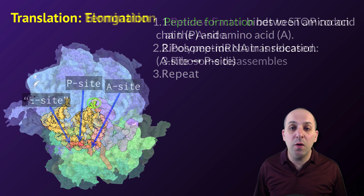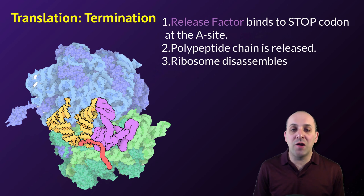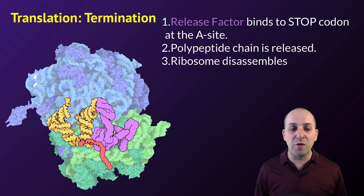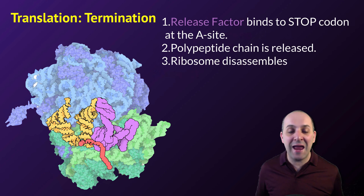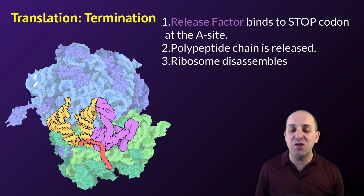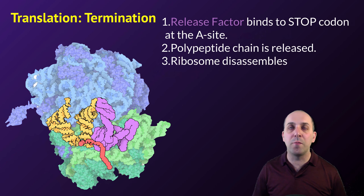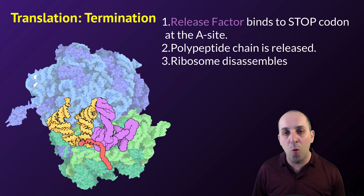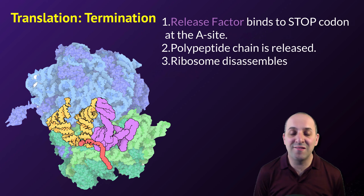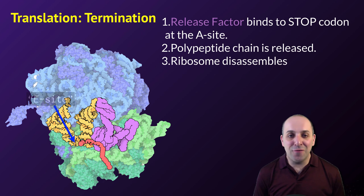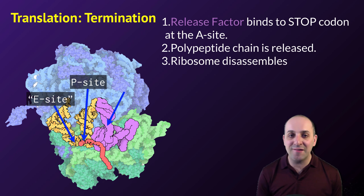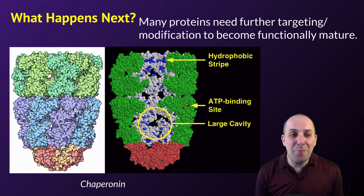Elongation is going to continue until we reach a stop codon. When the stop codon in the transcript is encountered, a tRNA molecule is not going to enter the ribosome. Instead, a protein referred to as a release factor, shown here in purple, is going to enter and bind to the stop codon at the A-site. A peptide bond cannot be formed between the polypeptide chain and the release factor, so the polypeptide chain is going to be released from the ribosome and the ribosome is then going to disassemble. The two subunits are going to come apart, leaving the mRNA open either for additional translation or to be disassembled by the machinery in the cell.